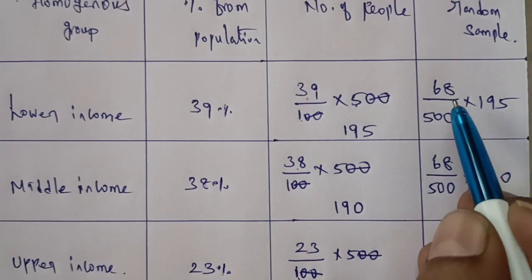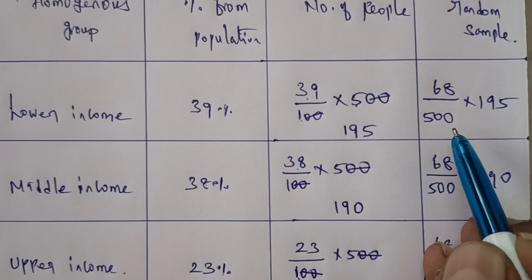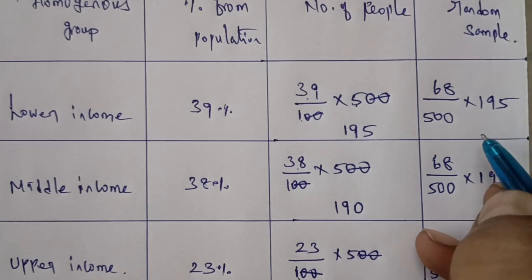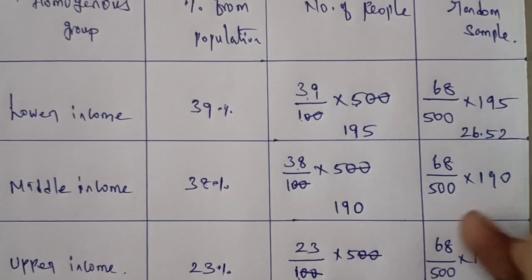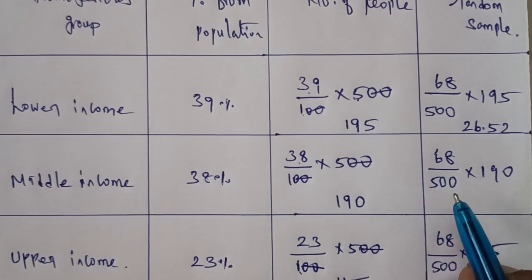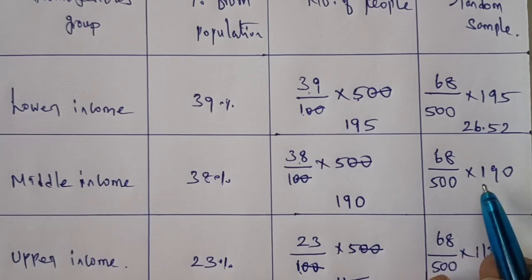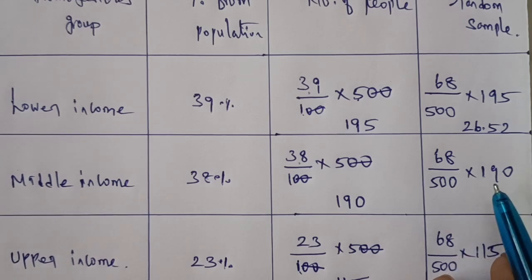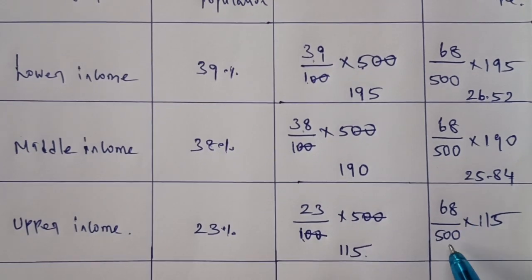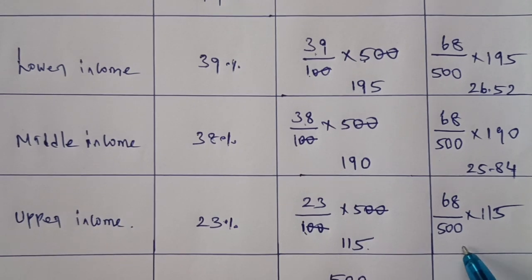For lower income: 68/500 = 0.136, multiplied by 195 gives 26.52. For middle income: 68/500 = 0.136, multiplied by 190 gives 25.84. For upper income: 0.136 multiplied by 115 gives 15.64.